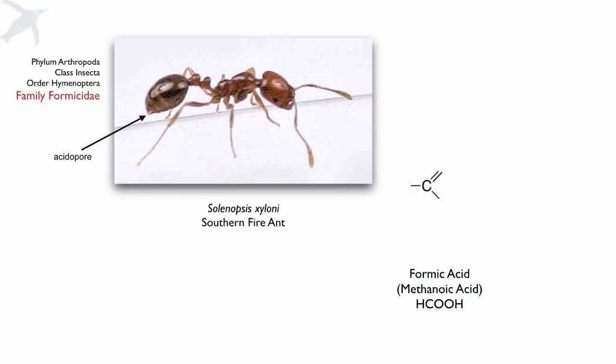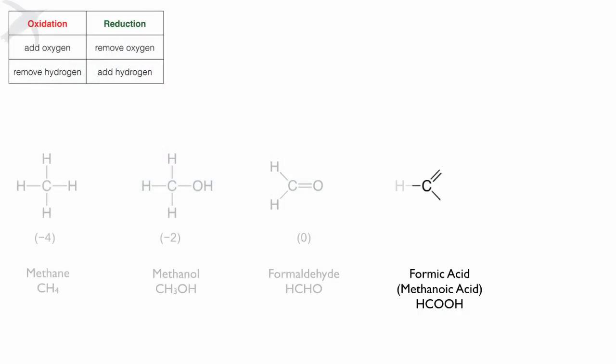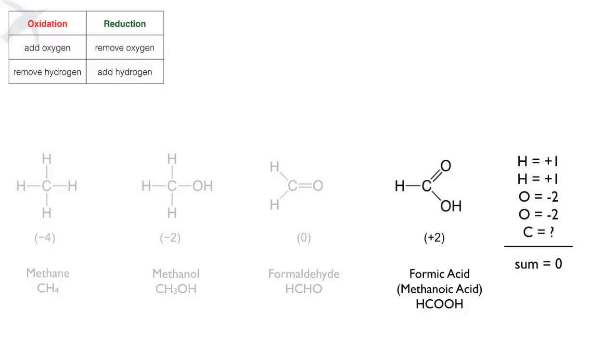Formic acid is next. Formic acid you'll find in ants. The Latin name formica is the word we use for ants. The nastiness of some ants, like the fire ant, comes from the acidopore — that's where the formic acid comes out. They used to actually squish up ants and distill them to get formic acid out. Let's look at the oxidation state of carbon in formic acid. We're adding more oxygens and removing more hydrogens. Carbon's oxidation state is now +2.